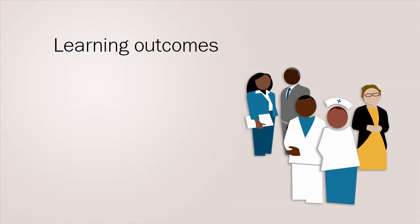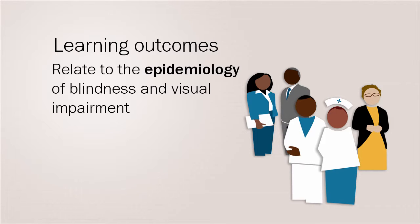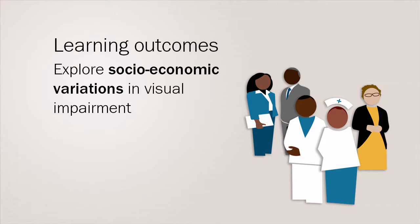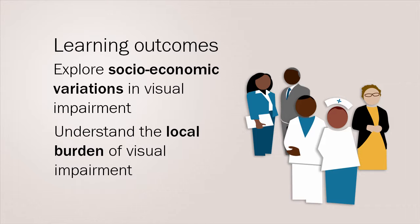This presentation on the epidemiology of visual impairment has four learning outcomes: relate to the epidemiology of blindness and visual impairment; describe the main causes of blindness globally; explore the trends of blindness with socio-economic variations, both globally and within a population; and apply the global perspective to understand the local burden of visual impairment.